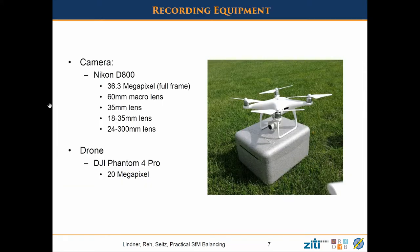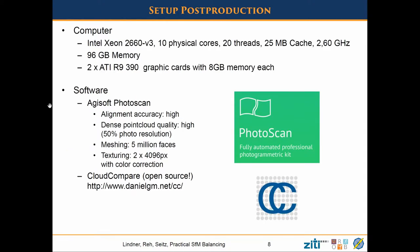Our equipment: we have a full frame camera with 36 megapixels and a full frame sensor, which means the sensor is quite big and gets quite nice images. As a drone we use the DJI Phantom 4 Pro, which has 20 megapixels. As a computer we have a workstation with 10 physical cores or 20 threads, 25 megabytes cache, a lot of memory, and two beefy graphics cards to handle our reconstructions.